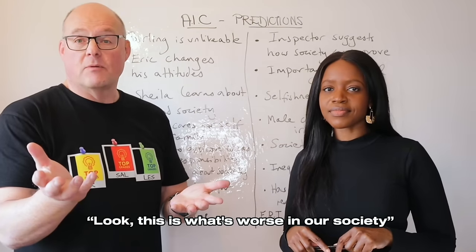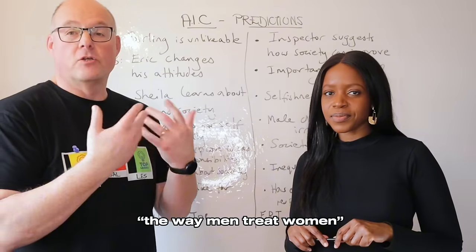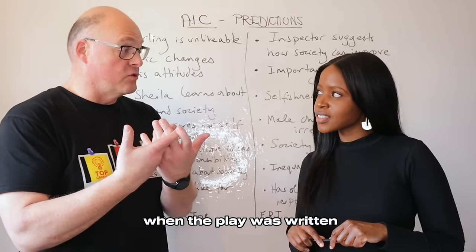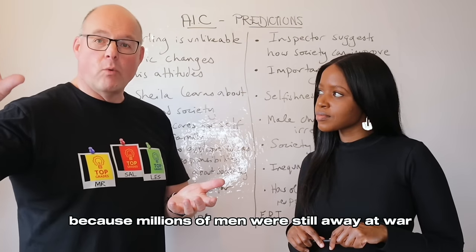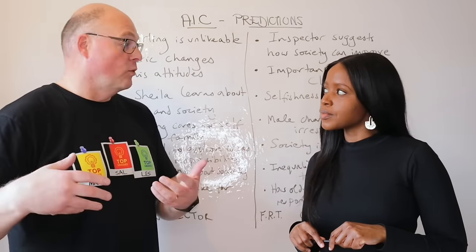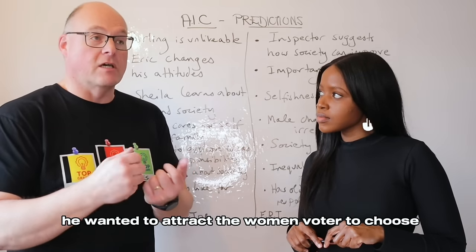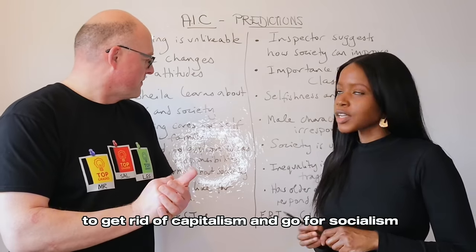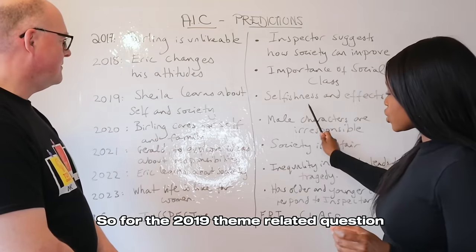That leads us to the patriarchal system, which Priestley also wants to change. He's been described as a bit of a feminist writer, which is why his victims are mainly female — he wants people to see how men treat women. This was particularly significant in 1945 when the play was written, because millions of men were still away at war and women would be voting in the new election. He wanted to attract the women's vote to choose socialism over capitalism.